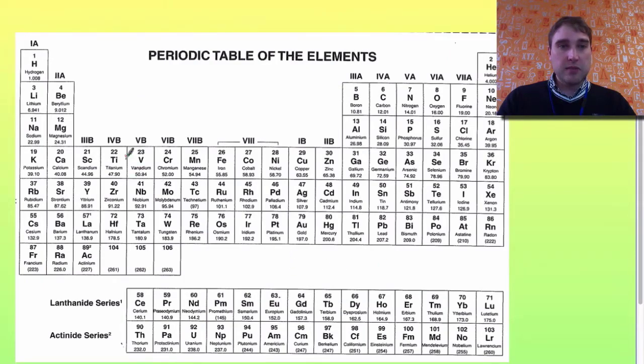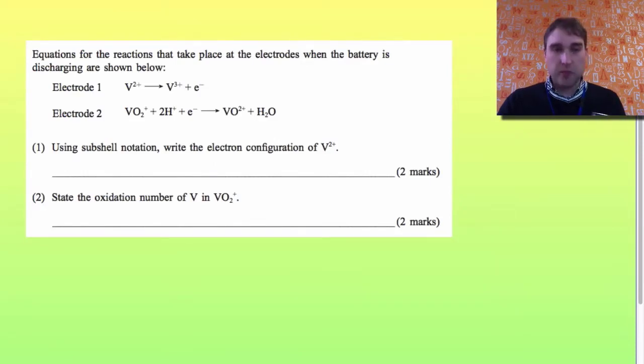So we need to find vanadium. It's number 23 here. I'm going to do vanadium first, then I'll figure out what the V2+ ion is. So it's number 23, so we go 1s2, 2s2, 2p6, 3s2, 3p6, 4s2. So we're up to 2, 4, 10, 12, 18, 20, 3d3.